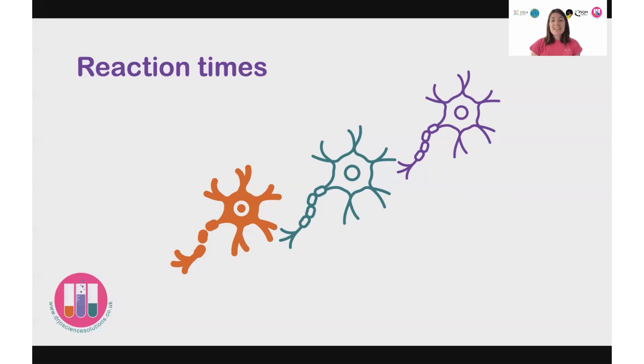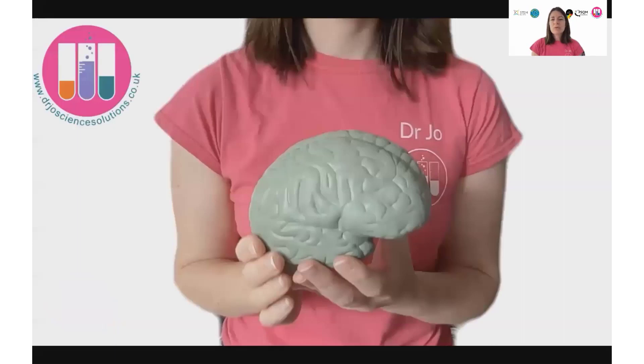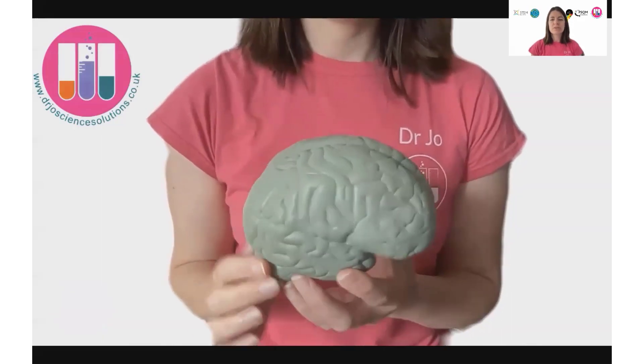And this can translate into different reaction times when you're performing a sporting activity, maybe catching a ball or playing football, or even going on the B of bang at a start of a running race. So if we have a closer look at the brain and think about what's going on with our reaction times and the information we're processing.